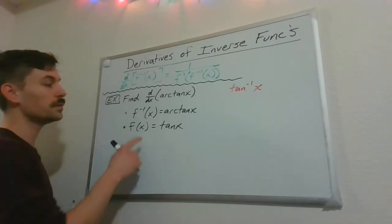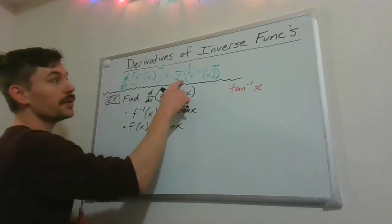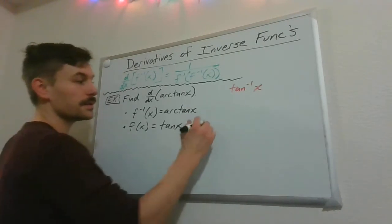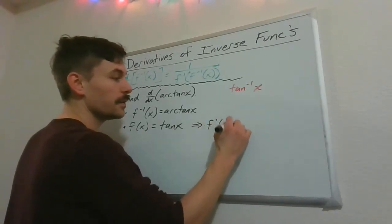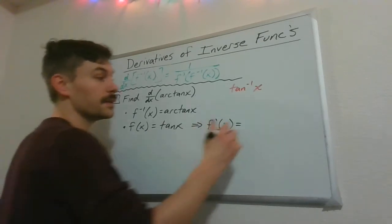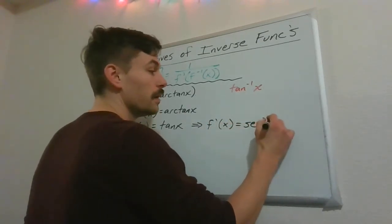Just like usual, we're going to need to know whatever f prime is. So if f is tangent of x, then f prime of x, hopefully we remember from derivatives of trig functions, that's going to be secant squared of x.